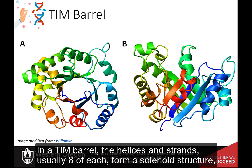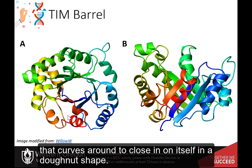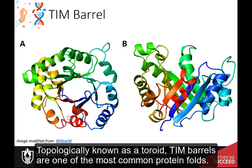In a TIM barrel, the helices and strands — usually eight of each — form a solenoid structure that curves around to close in on itself in a donut shape, topologically known as a toroid. TIM barrels are one of the most common protein folds.